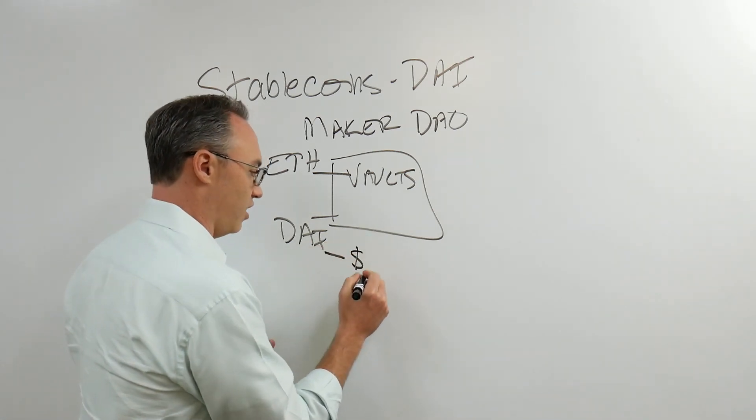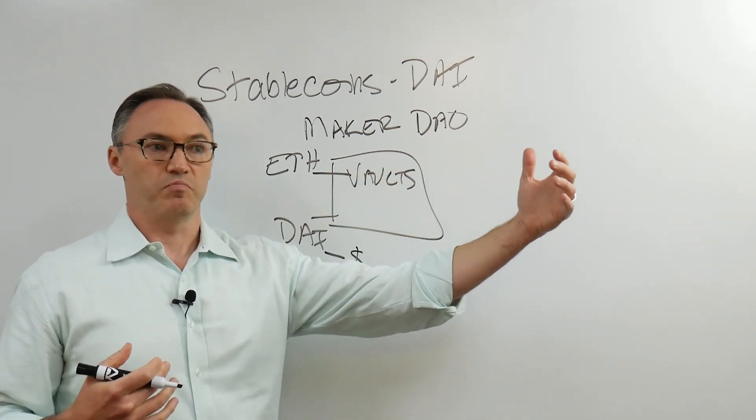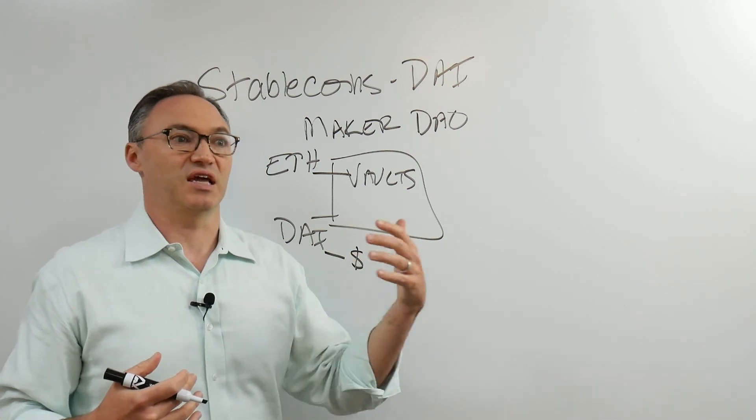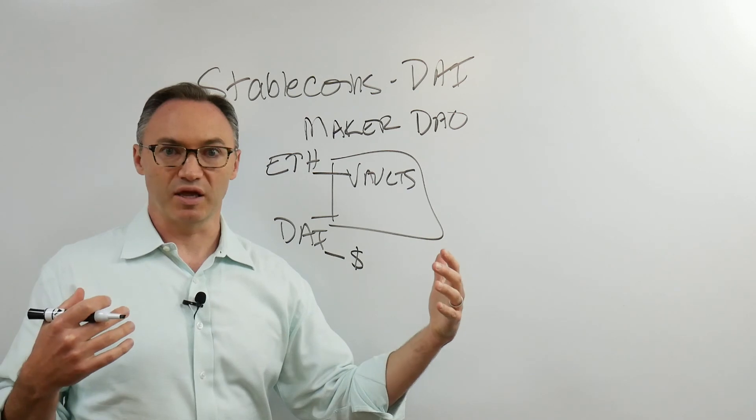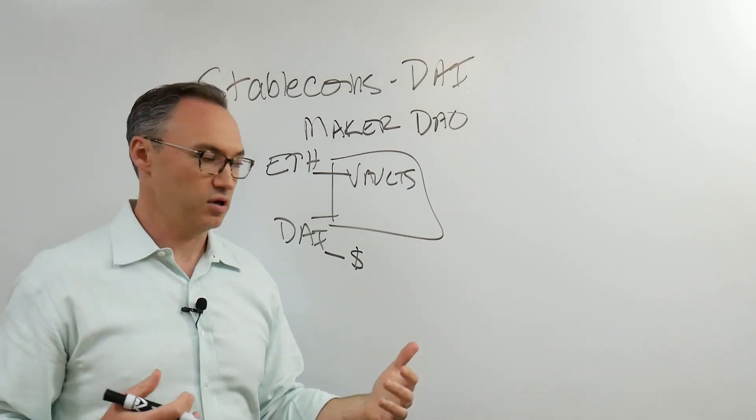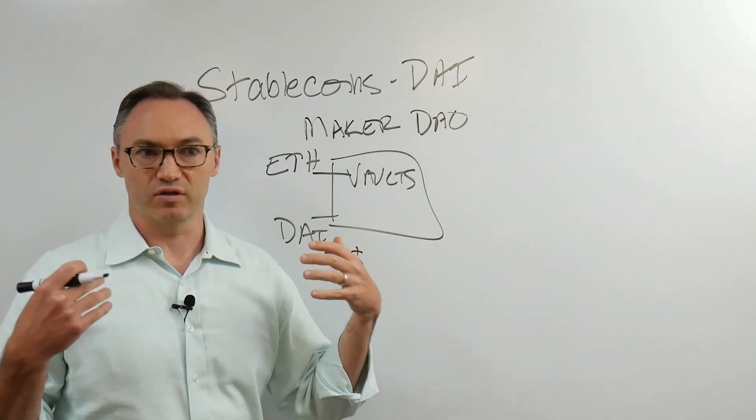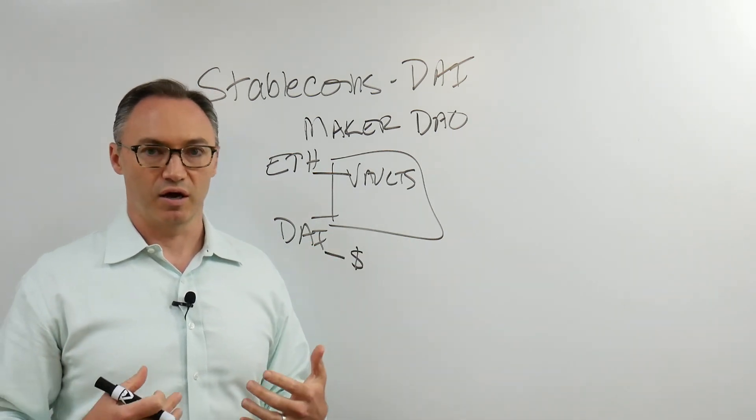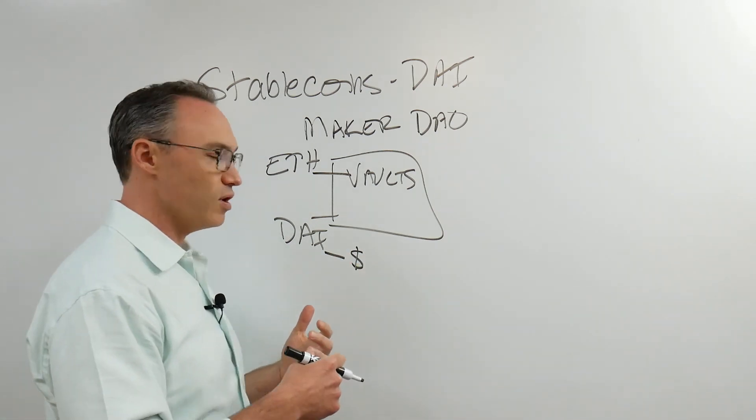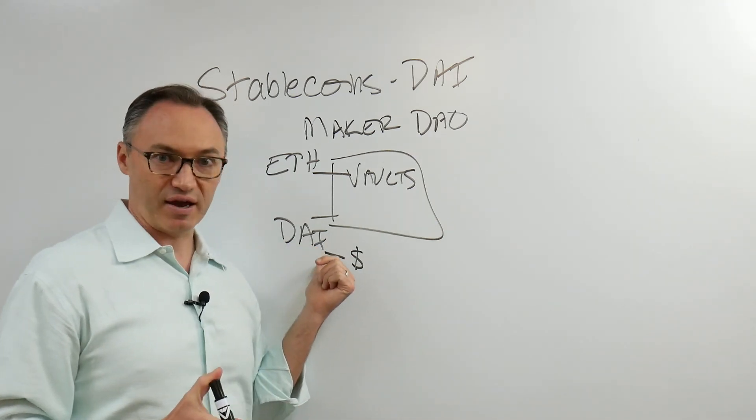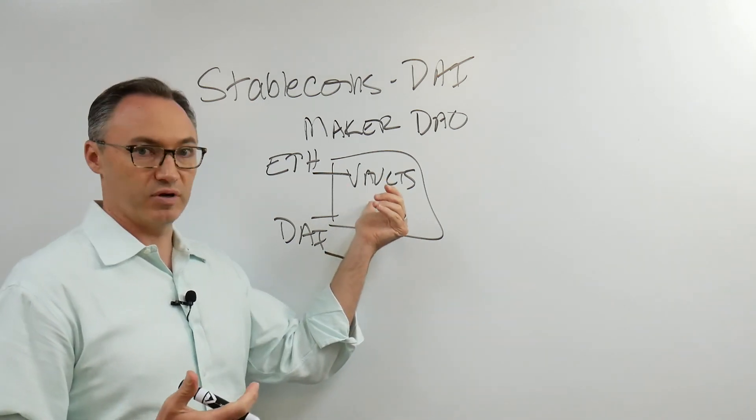Why would anyone lock up their ETH to get DAI? Well they might do it because DAI, remember, is worth roughly a dollar. They can maybe transact in that. If I want to go actually make a transaction, if I want to lend money, if I need to send, you know, a hundred bucks to someone who's around the world and I don't want to use the banking system because it's going to cost me twenty-five dollars to send the hundred, I might just send them DAI. Say, give me your wallet address. I'll send you a hundred DAI. We both agree that that's worth a dollar. We've done this ourselves. We have sent DAI to people that have done some work for us around the world.